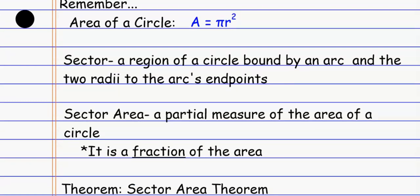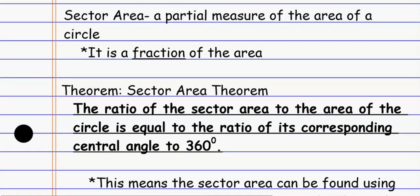Very much like we did when we found arc lengths, sector areas are pretty much the same thing. It's a portion of the entire area, so we can set it up using proportions, or we can think of it as a fraction of the whole area and just multiply the area by the fraction that we need. The ratio of the sector area to the area of the entire circle is the ratio of its corresponding central angle to 360 — literally the same thing we had with arc length, except instead of arc length and circumference, it's sector area and area of the whole circle.